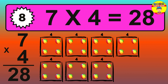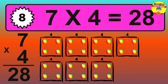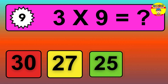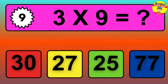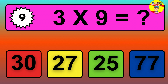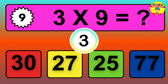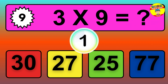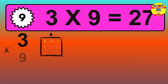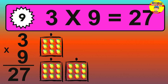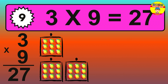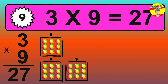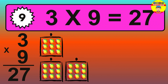Question 9. 3 times 9 equals what? The answer is 3 times 9 is 27. To calculate, we have 3 groups with 9 balls each one. So, how many balls do we have? 27 balls.